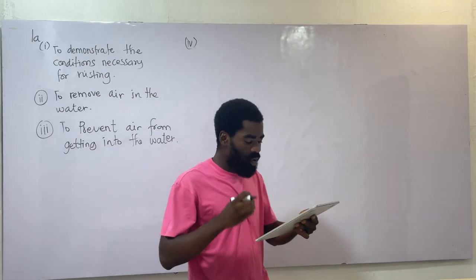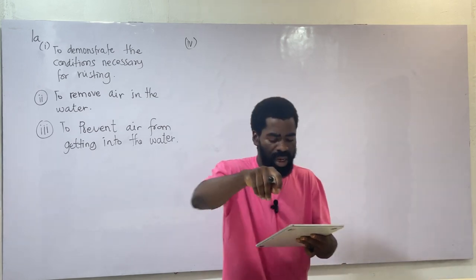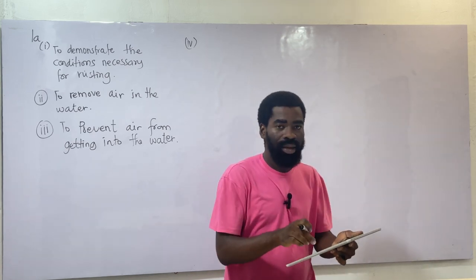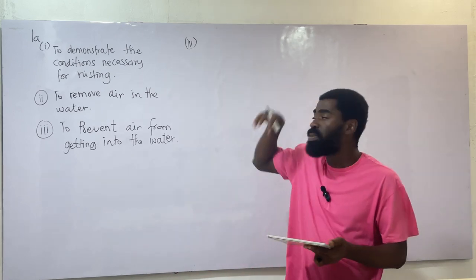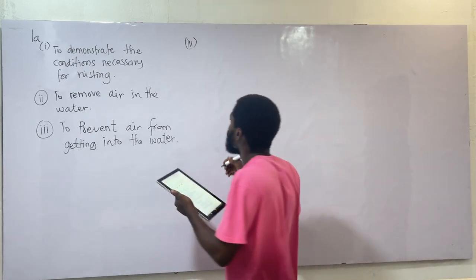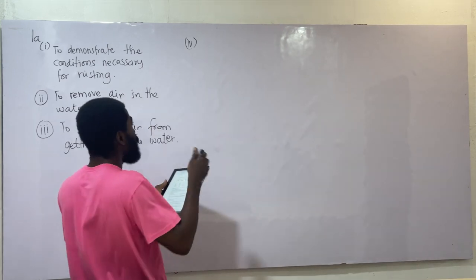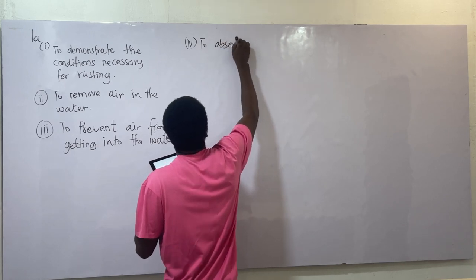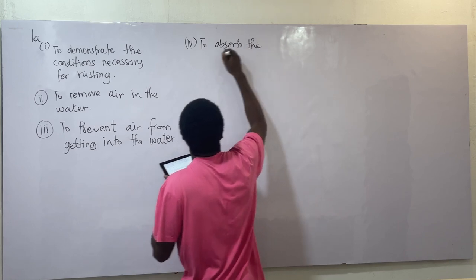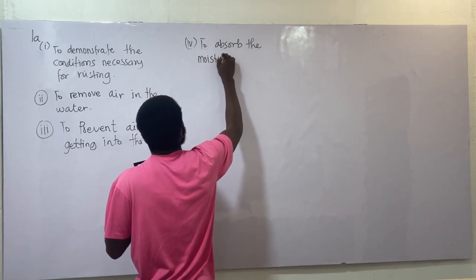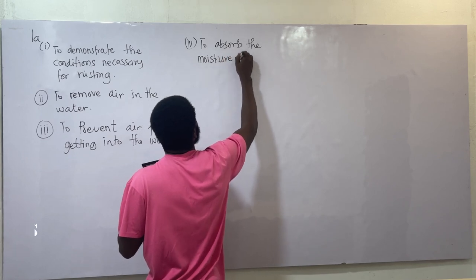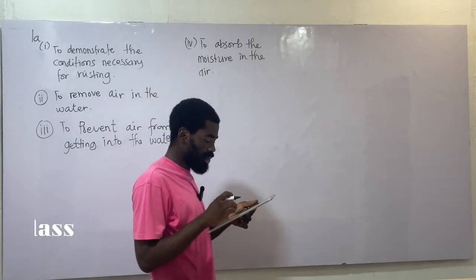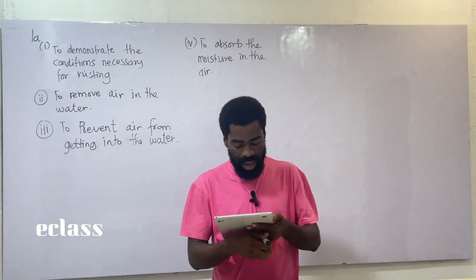Question 1a-iv: What is the purpose of calcium chloride in test tube C? The dry air means there is no water present. The calcium chloride is used to absorb the moisture in the air — or you can say, to remove water from the air. That is the function of the calcium chloride in test tube C.